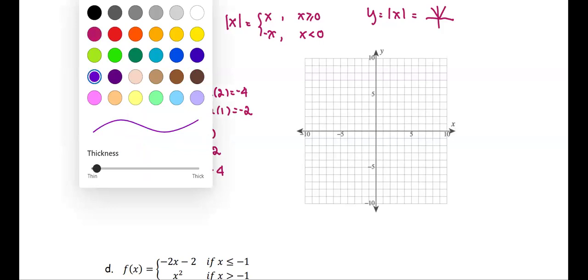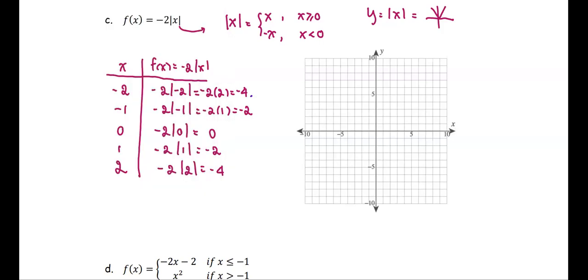Then from this, we put in the ordered pairs. It will be (-2, -4), (-1, -2), (0, 0), (1, -2), and (2, -4).